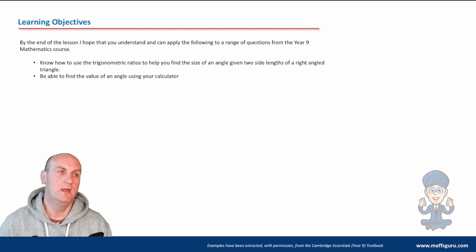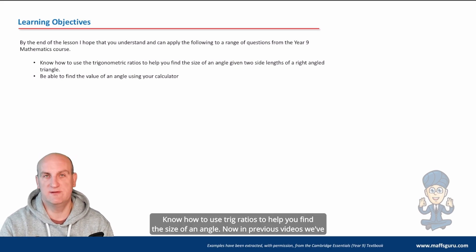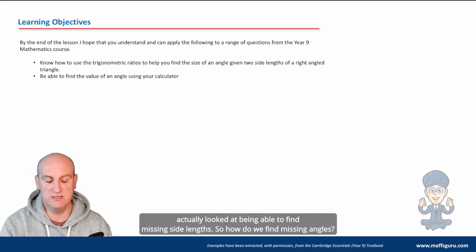Right. What am I going to do? Know how to use trig ratios to help you find the size of an angle. Now in previous videos, we've actually looked at being able to find missing side lengths. So how do we find missing angles?